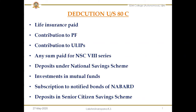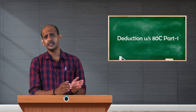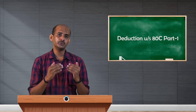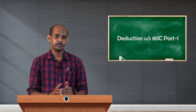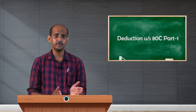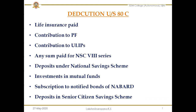The next option is contribution to ULIPs — unit linked insurance plans or policies. Endowment policies and unit linked policies are available. When you invest your money in unit linked insurance policies or market linked insurance policies, the premium you pay on these policies is also eligible for deduction under this section. Additionally, any sum paid for NSC 8 series — national savings certificate schemes — if you have invested in these, you can claim the deduction for NSC 8 series as well.